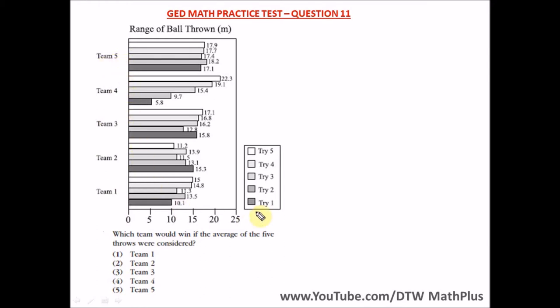You can see the different colors — the darker shade is try 1, the next is try 2, then try 3, try 4, try 5. So for team 1 you have try 1, try 2, try 3, 4, and 5.